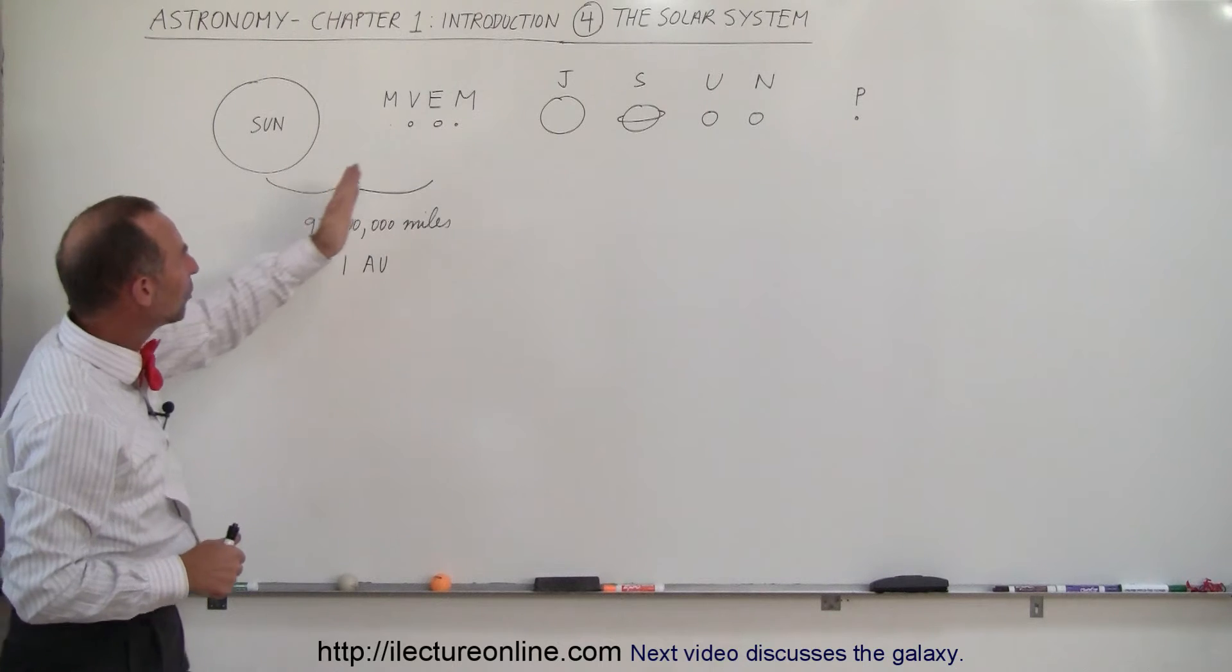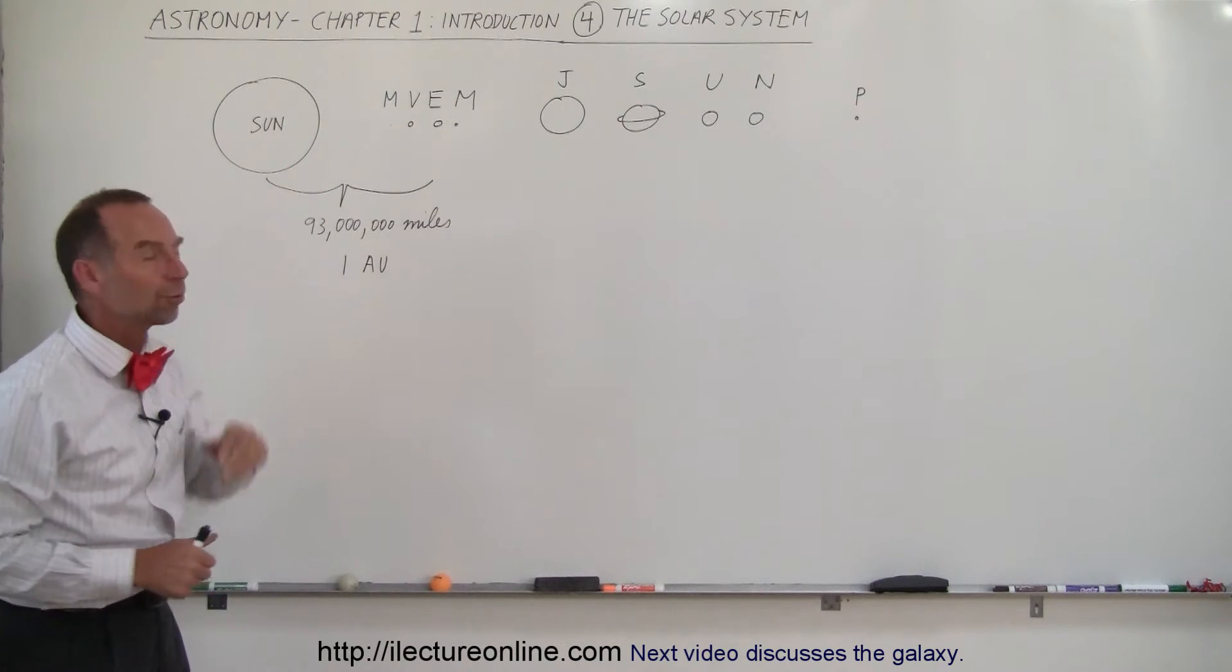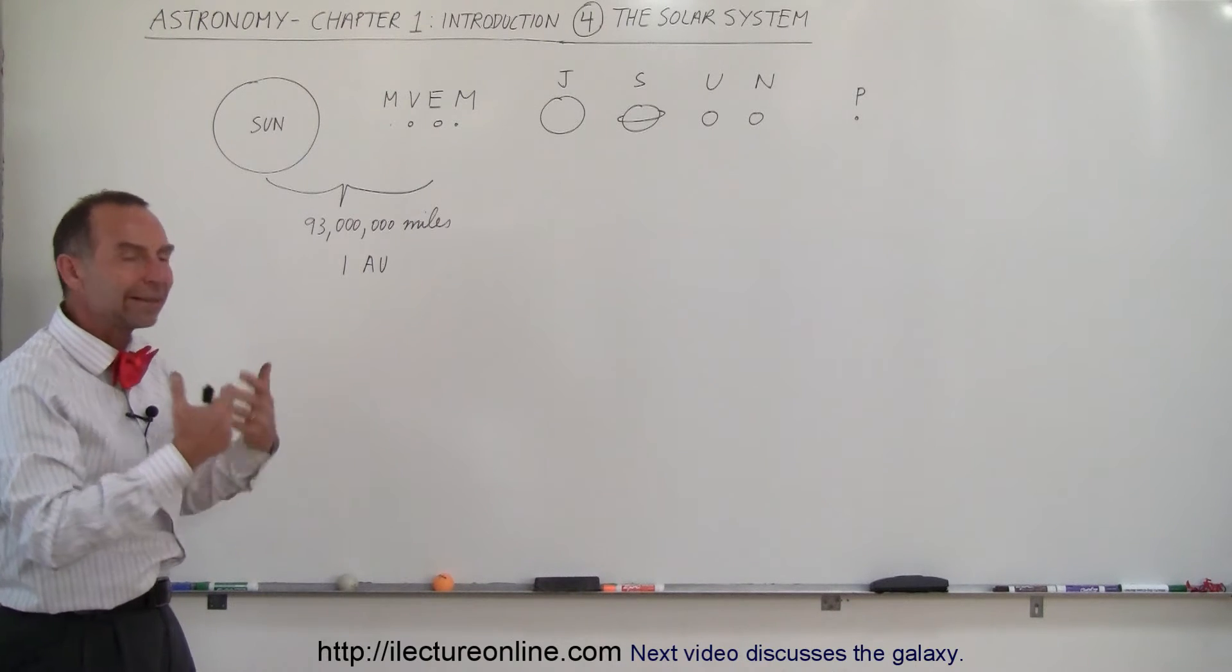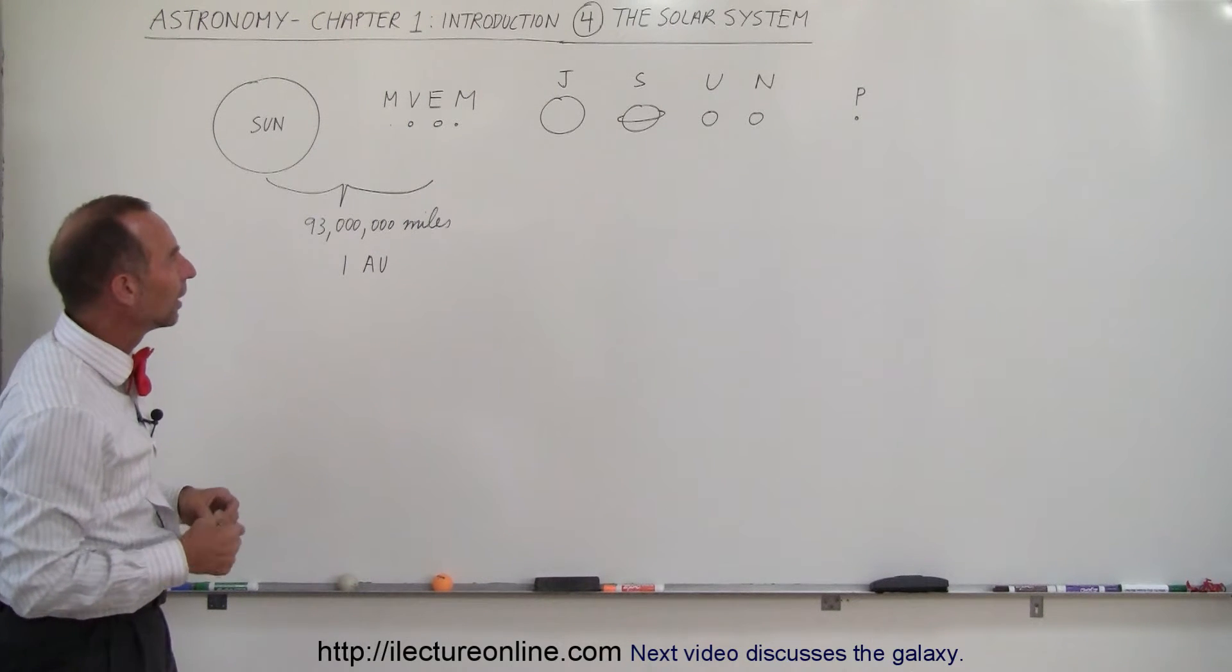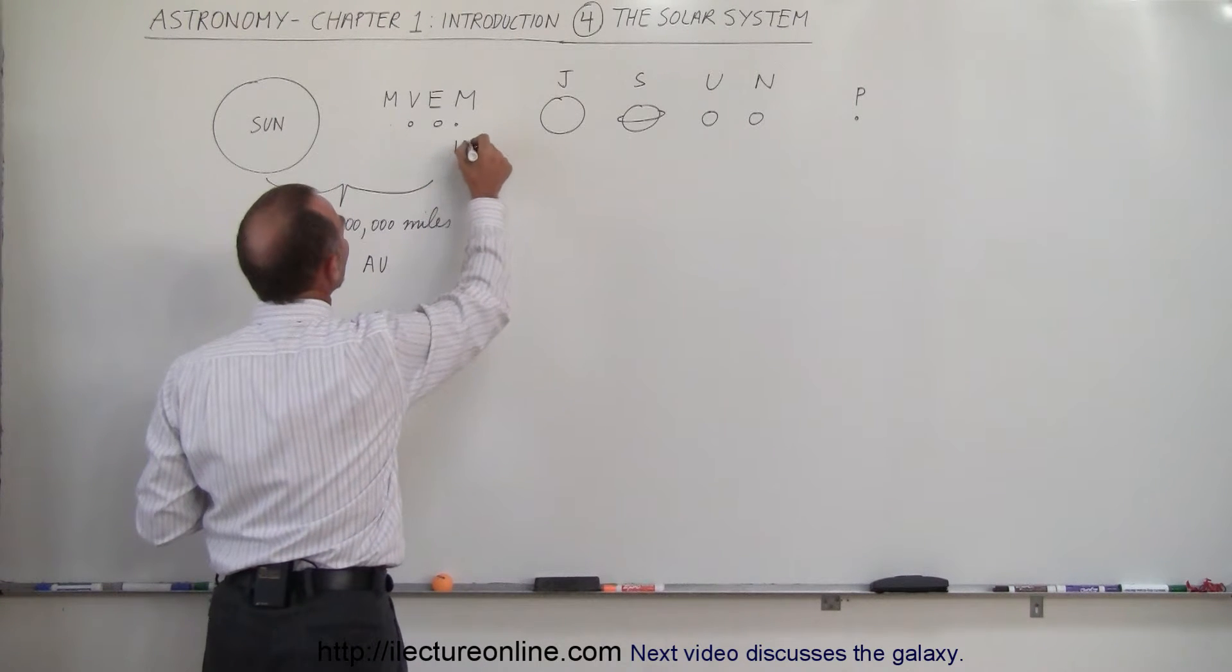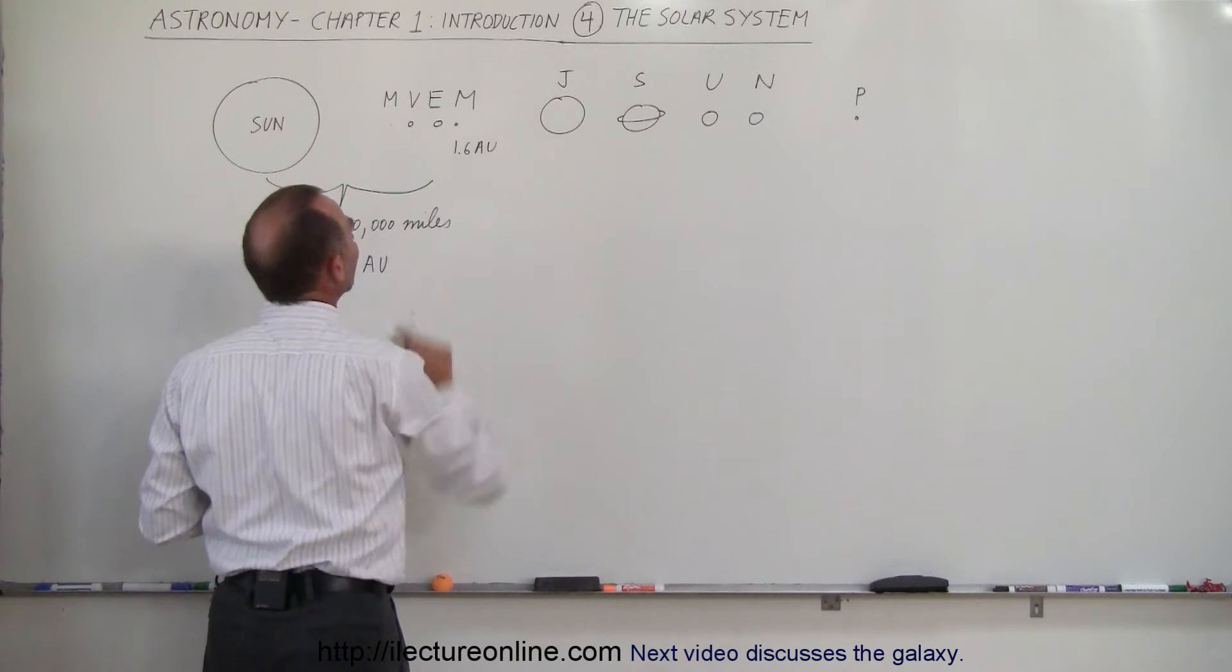Notice that the distance between the Earth and the Sun is about 93 million miles, which we call one astronomical unit. It's a good way of talking about distances inside the solar system. Based upon that, we can say that Mars is about 1.6 astronomical units away from us.